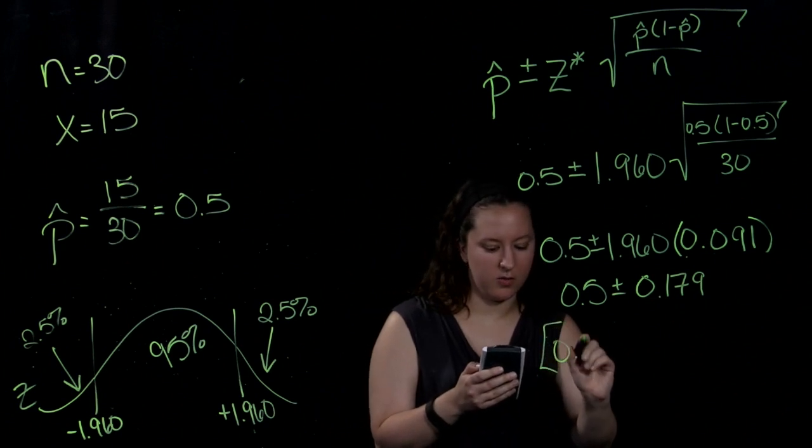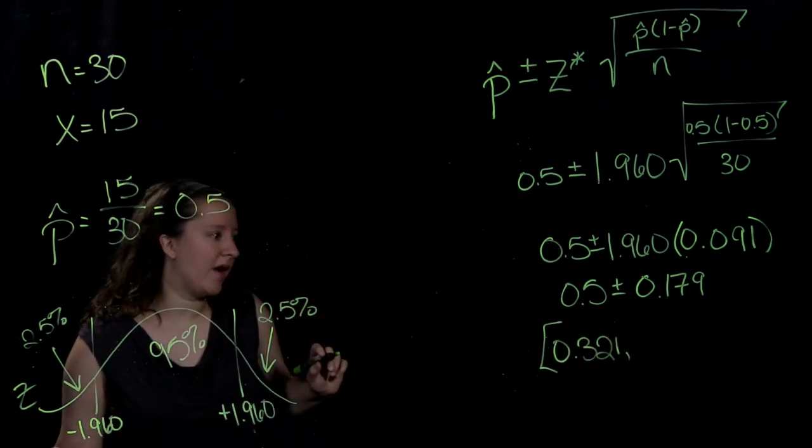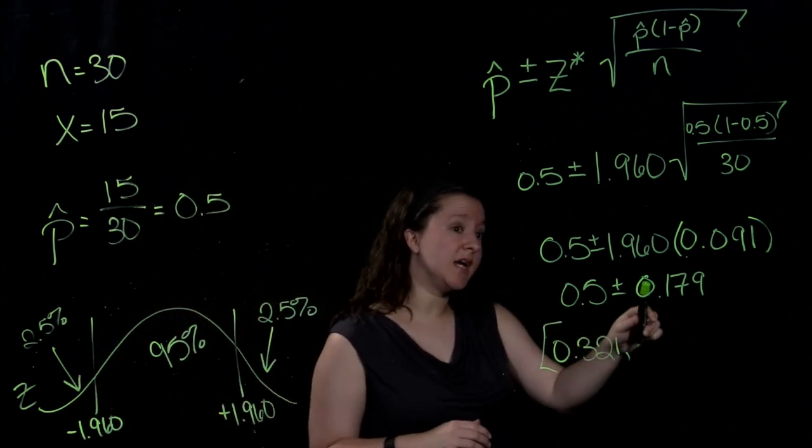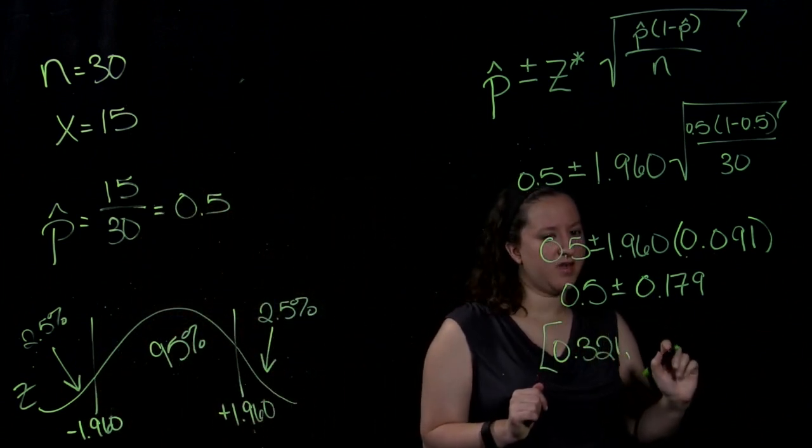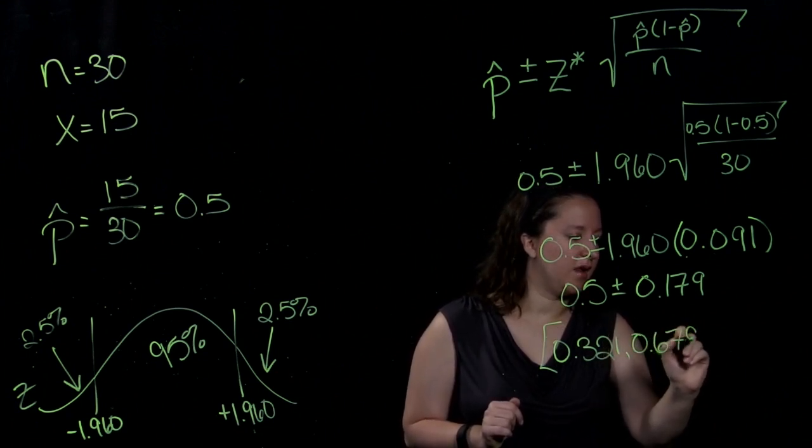which gives us 0.321. And our upper bound is going to be 0.5 plus 0.179, which will give us 0.679.